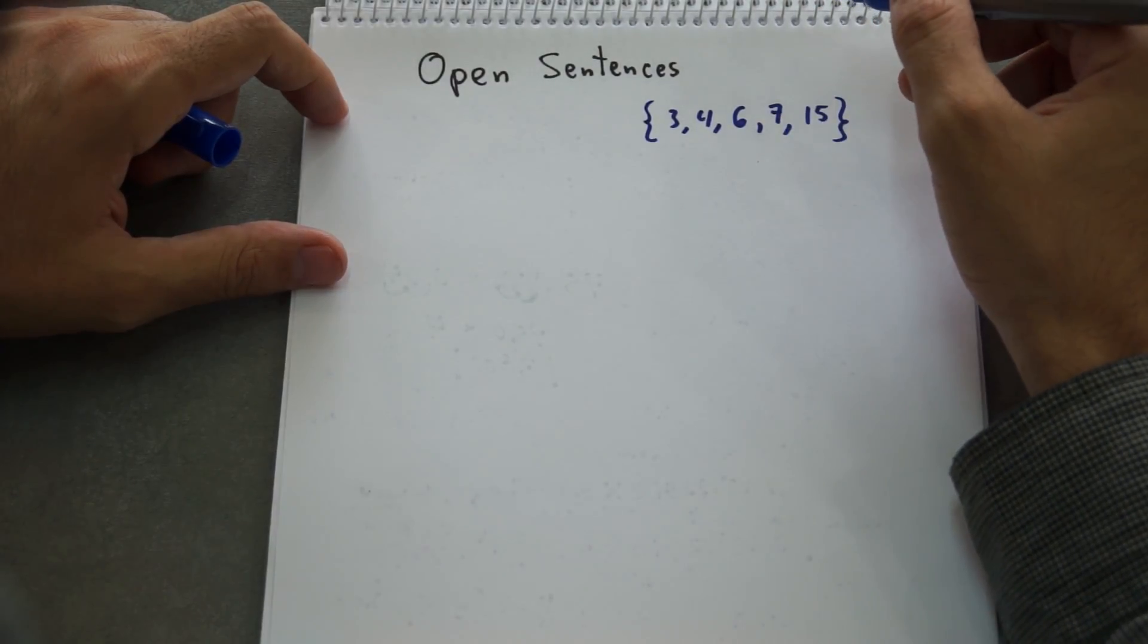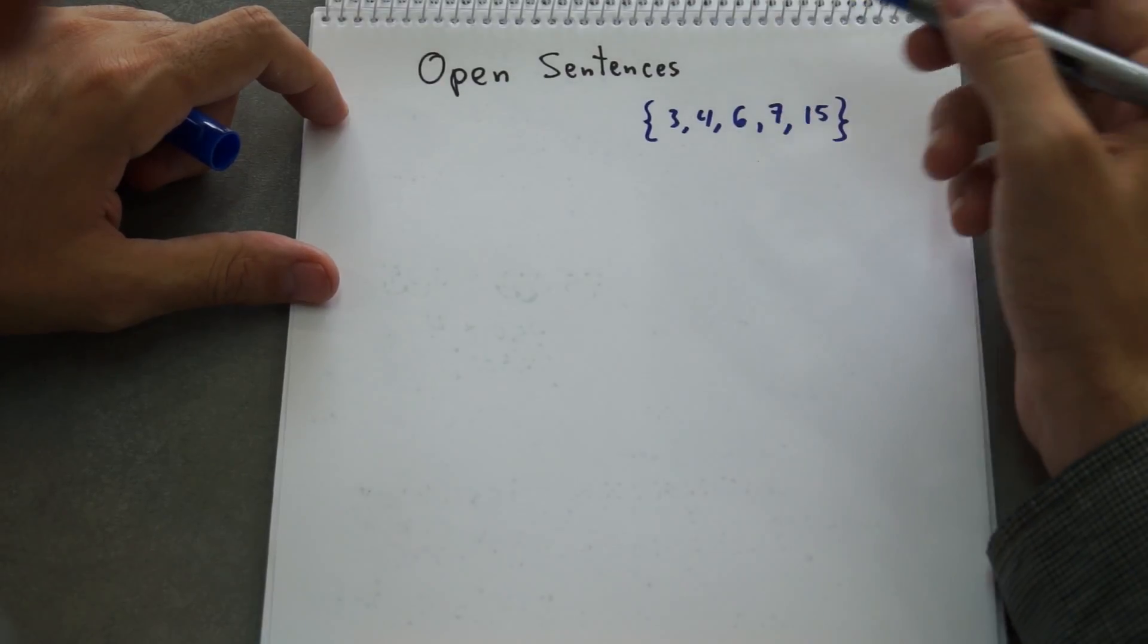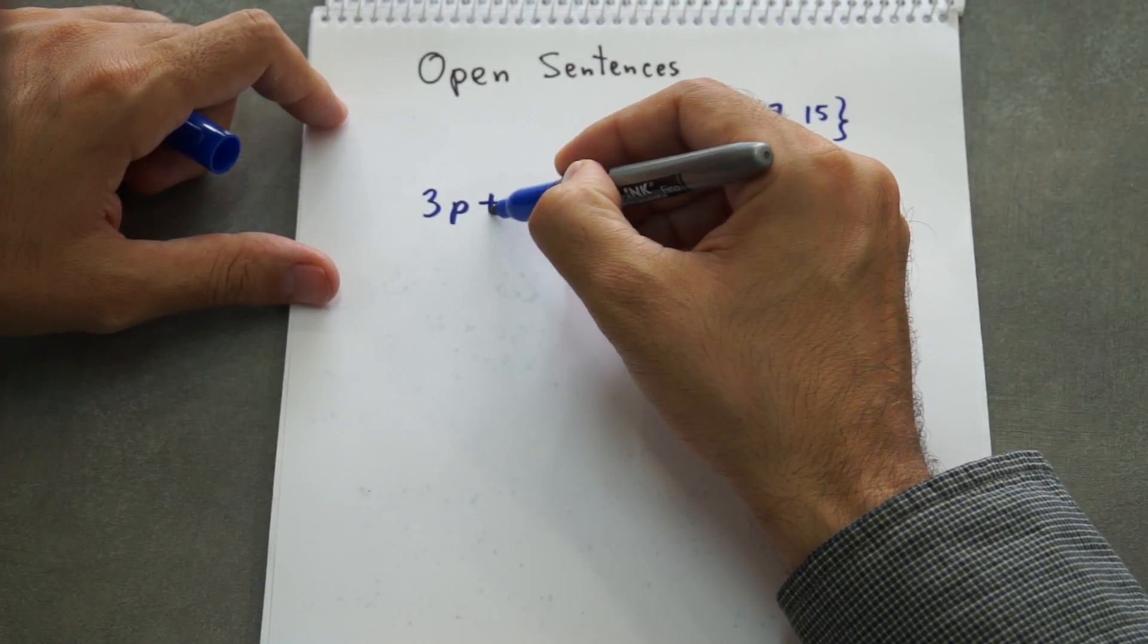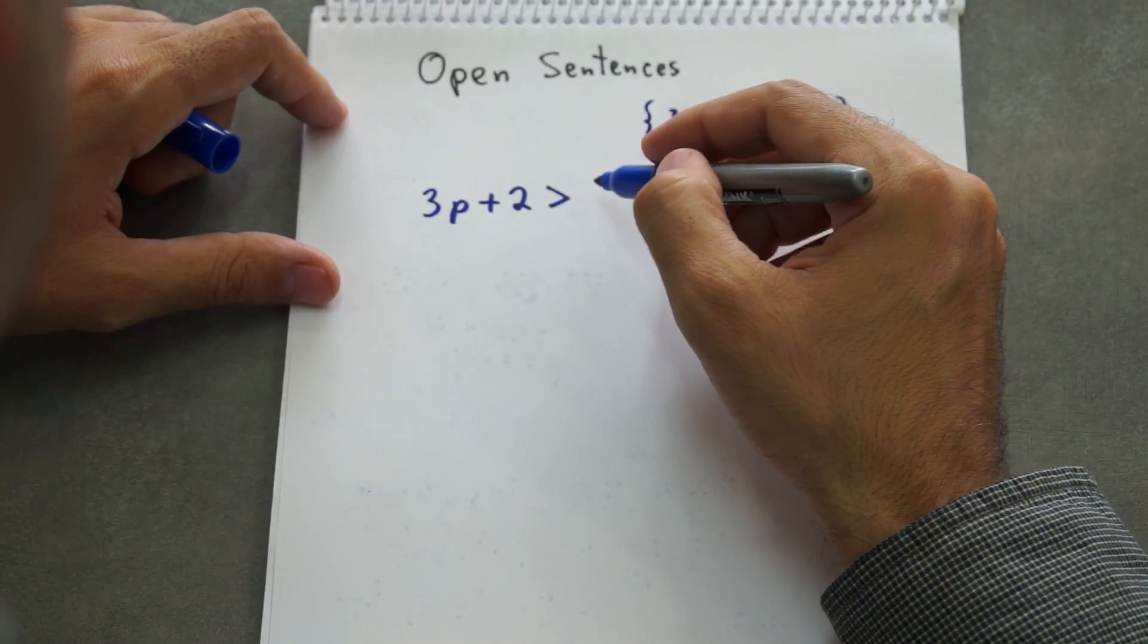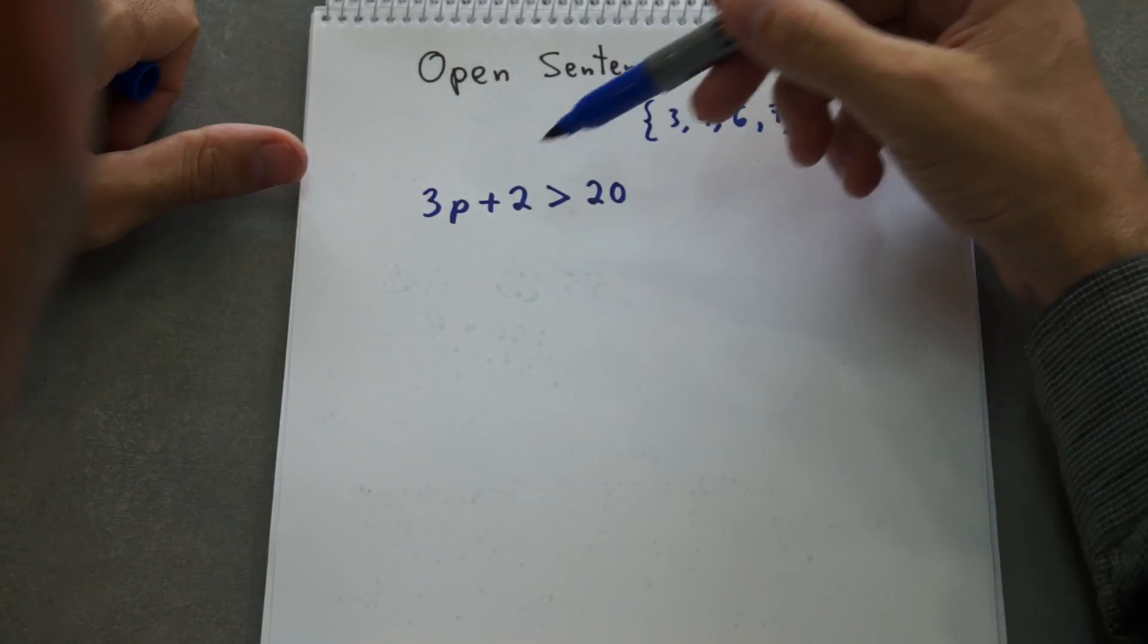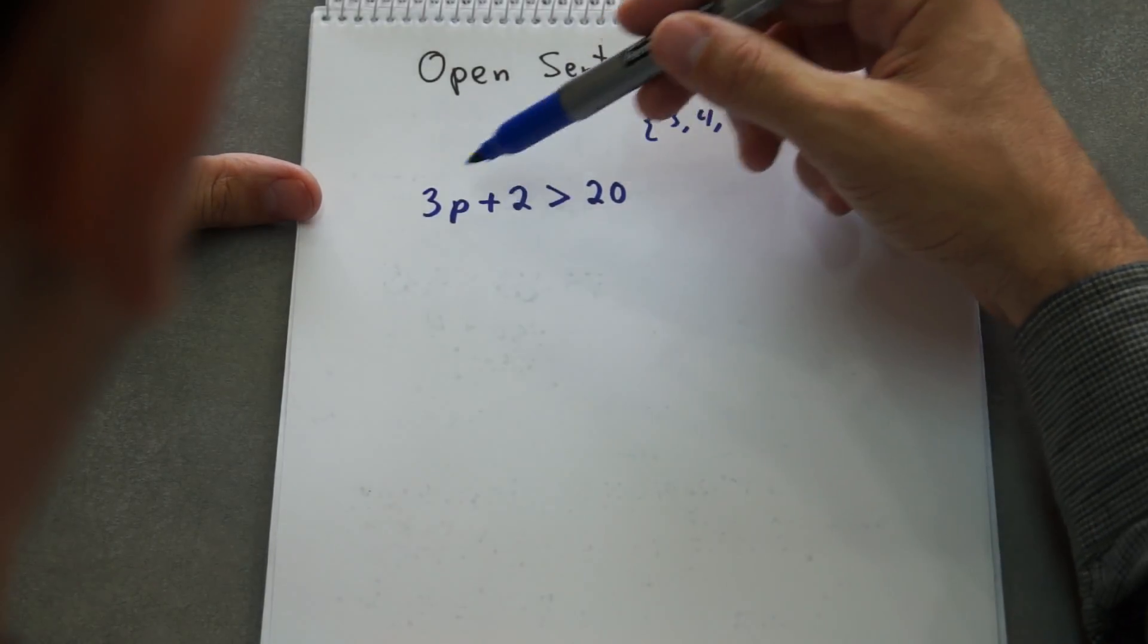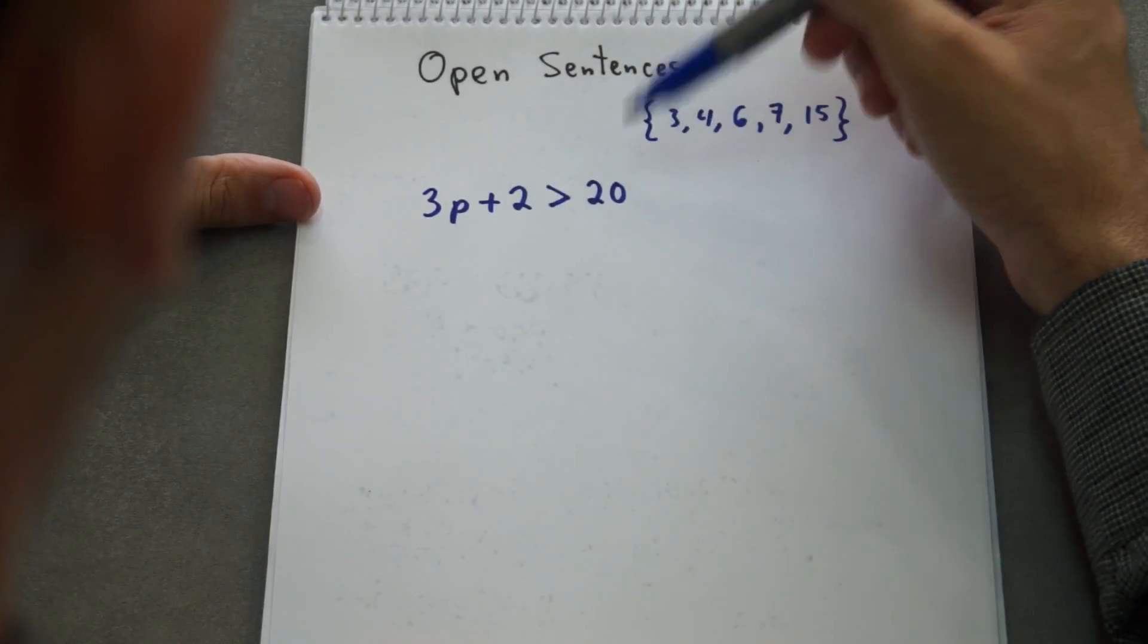This is the replacement set. And the equation would be like 3p plus 2 would be greater than 20. So we need to replace all those numbers in the variable p and then check which of them, when we plug it in, will be greater than 20.